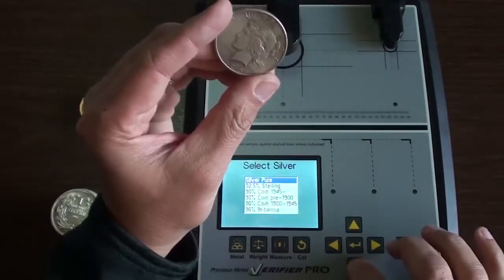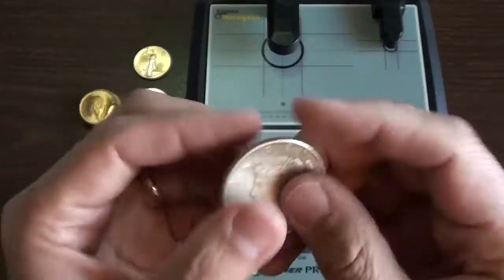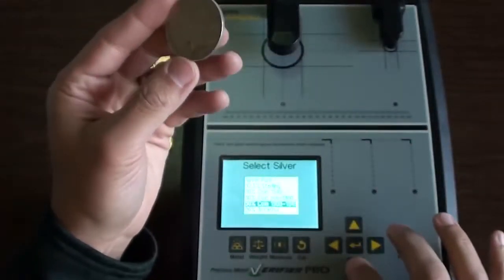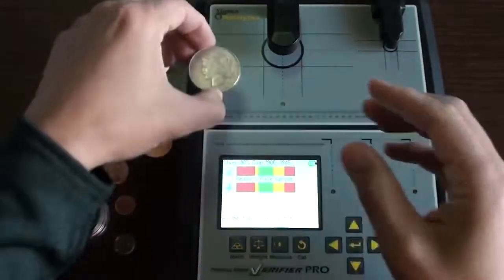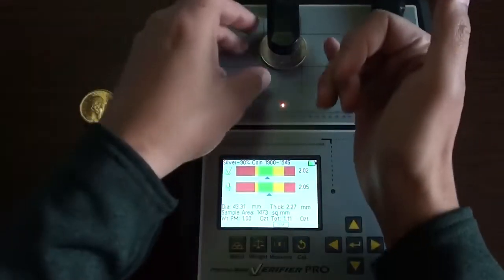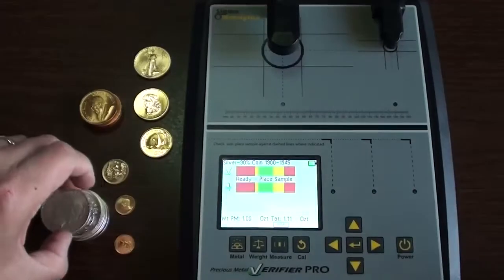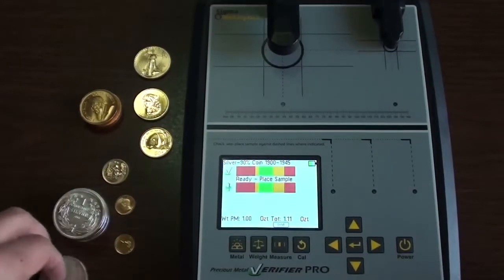The last one that I'll do is going to be a 90 percenter. This is a 1925 piece dollar. Haven't had a chance to check any of these. I'm going to go ahead and throw it on there. Boom. Right on the money. So there you go. Testing some 90% constitutional silver or junk silver as some would call it.